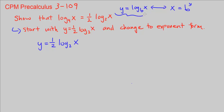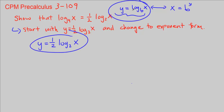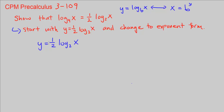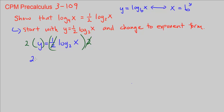We want to make sure our expression is in that same format. Right now it almost is, but we have the times 1 half. So we want to get rid of that half by multiplying both sides by 2. The 2 cancels with the half, giving us 2y is equal to log base 2 of x.